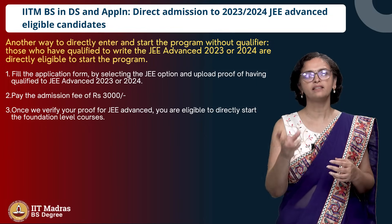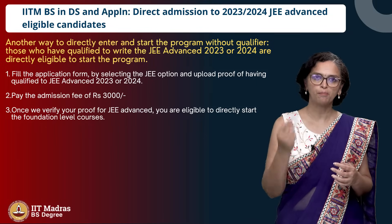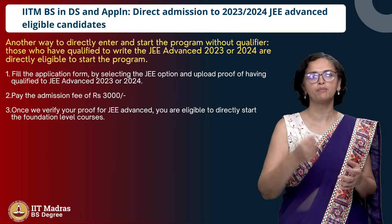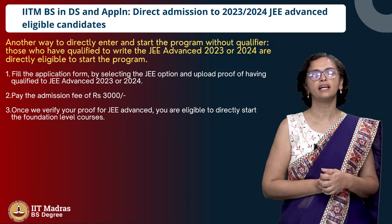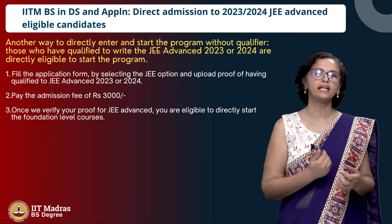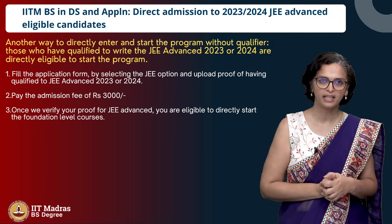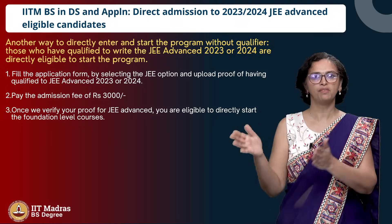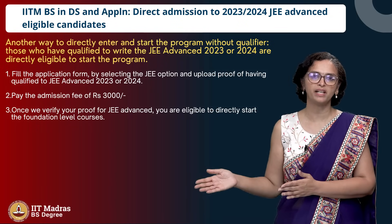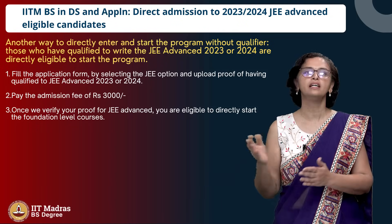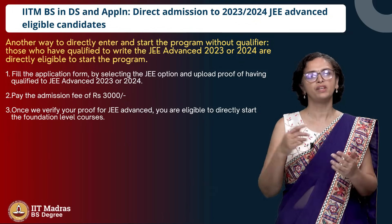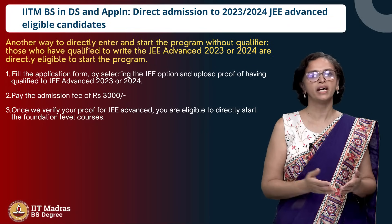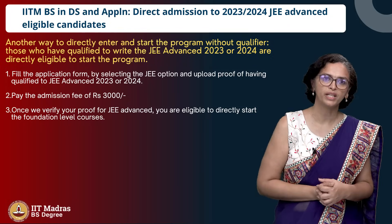You fill the application form, select the JEE Advanced option, and upload proof that you qualified for JEE Advanced — there should be some notification that you received. Upload that as part of the form, then pay the admission fee of rupees 3000. We will go through your application, verify your documents and JEE proof, and if the proof is valid, we will approve your application. You will be deemed qualified to enter the program and can start directly at the foundation level.